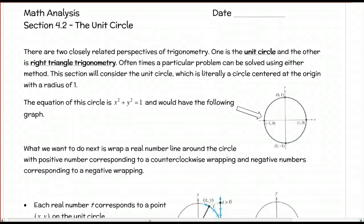This is Mr. Martin with the video notes for section 4.2, video number one. There are probably going to be at least two videos for this section, maybe three, depending on how long they run. We're going to be talking about the unit circle today. The unit circle is related to one of the perspectives of trigonometry — we'll talk about the other one in section 4.3. One perspective is based on the circle, and the other is based on right triangle trig.